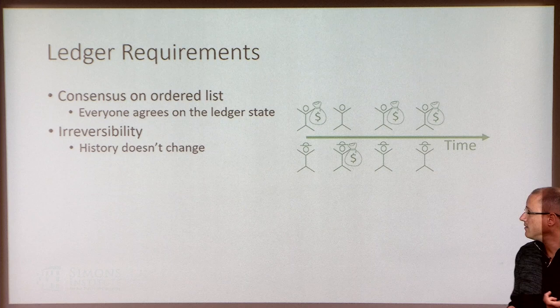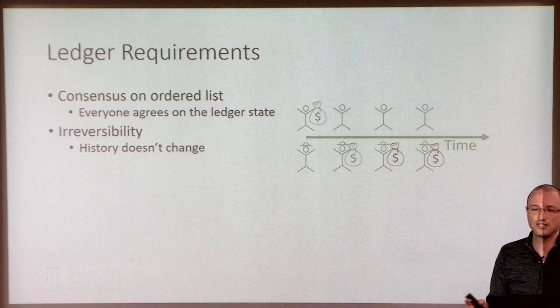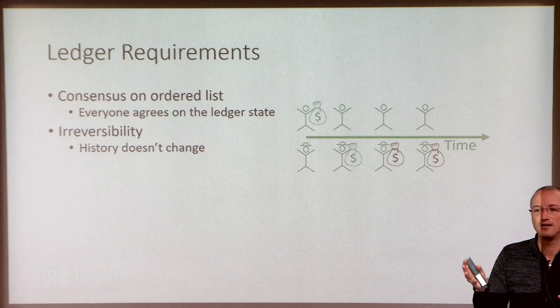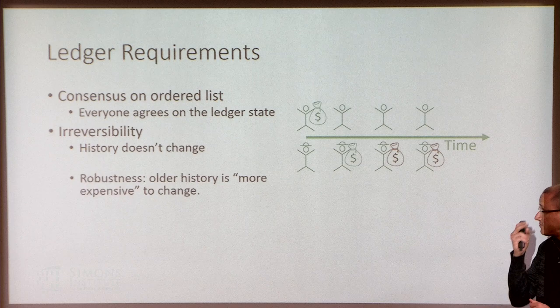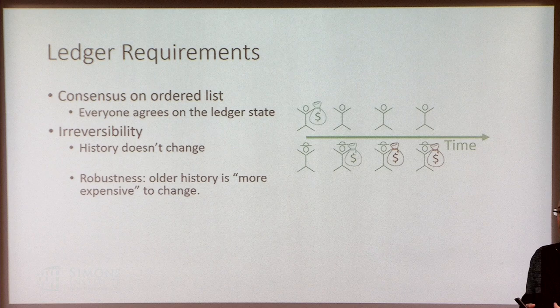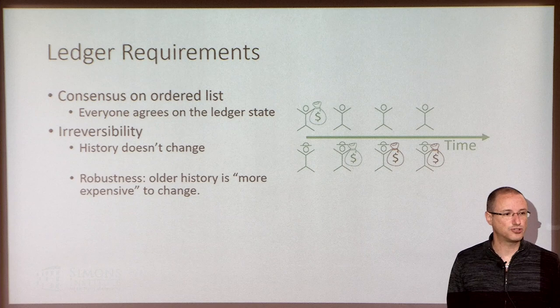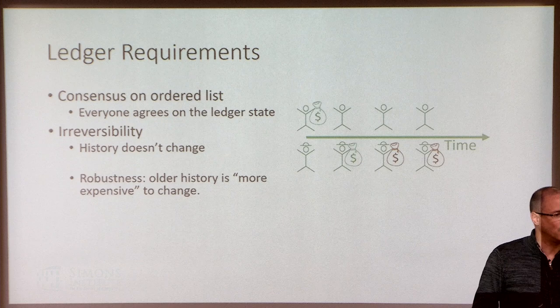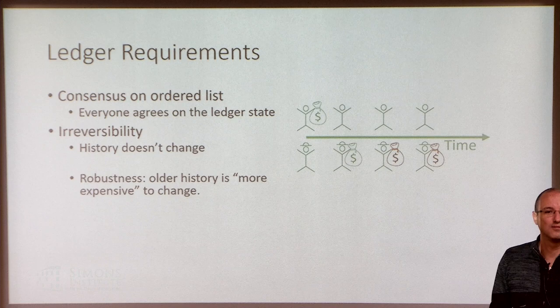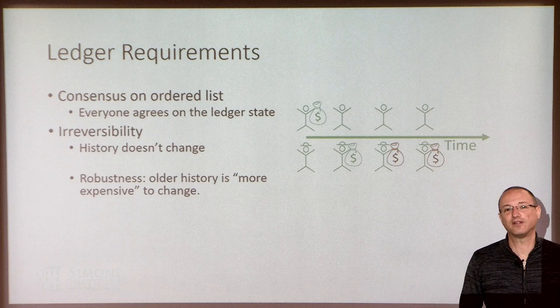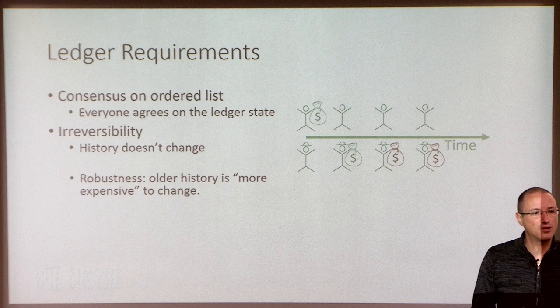We could theoretically have a consensus protocol where everybody agrees at all times on what the state is, but today we agree that Alice has the money, and then tomorrow we suddenly agree that Bob had the money all along — that is not a good situation for a cryptocurrency. We'd also like robustness in terms of changing old history. It would be nice if older things are more set in stone, because if somebody can change something that happened 10 years ago, everything since then is chaos.